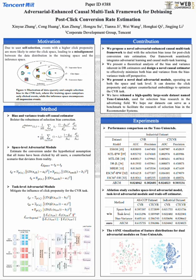Existing mainstream approaches mainly revolve around causal estimators such as inverse propensity weighting or doubly robust learning, which aim to eliminate the influence of bias by taking the reciprocal of the estimated click rates. We have extended these methods by introducing adversarial learning techniques to further address the sample selection bias issue, which we refer to as the ACM model.